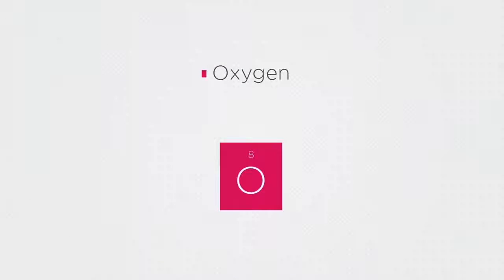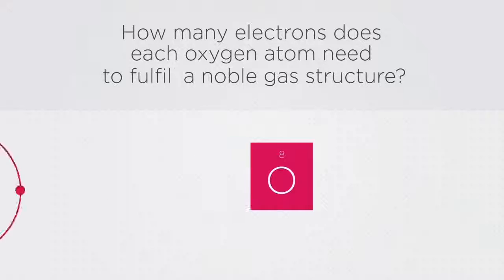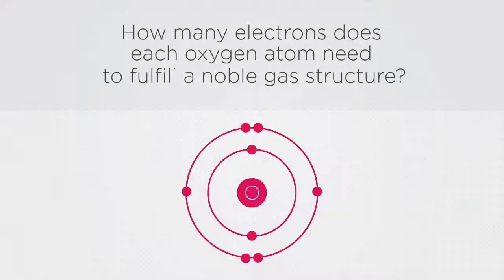In the next example we are going to consider oxygen. It's in group six, therefore how many electrons does each oxygen atom need in its outer shell to fulfill a noble gas structure? Remember, oxygen has eight electrons in total, so we would need to fill the second shell.